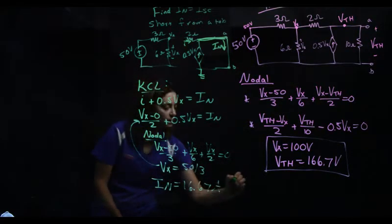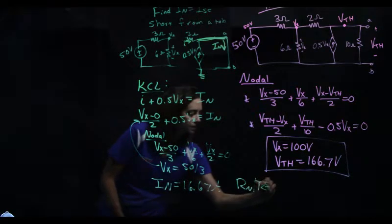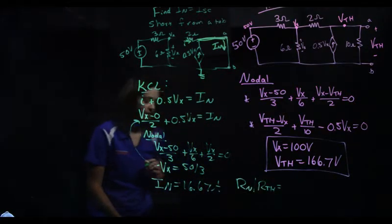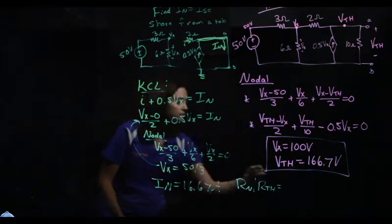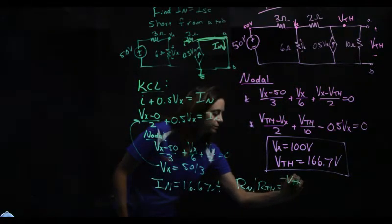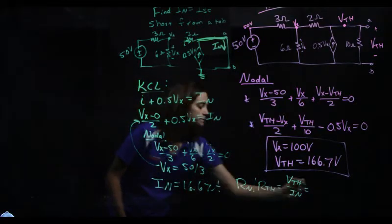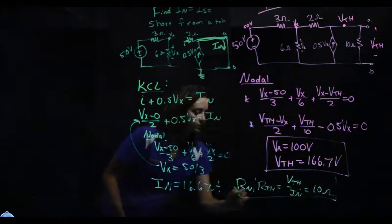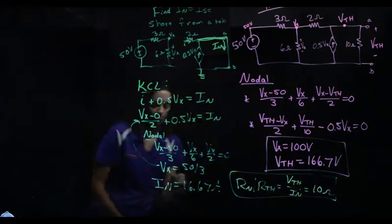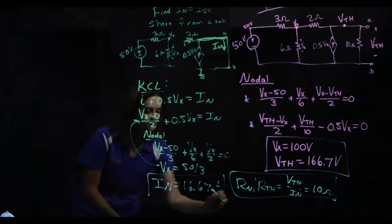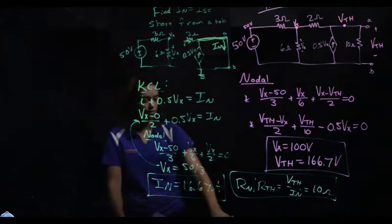And that now means that my R-Norton slash R-Thevenin is equal to V-Thevenin over I-Norton, or 10 ohms. Here's all the values. So that's finding I-Norton directly.